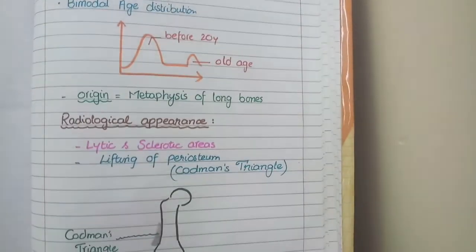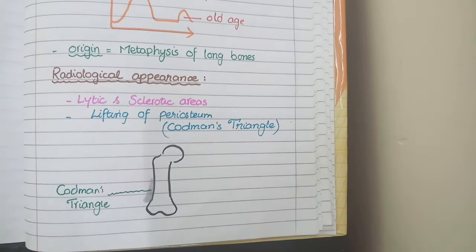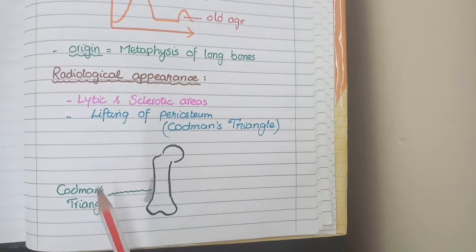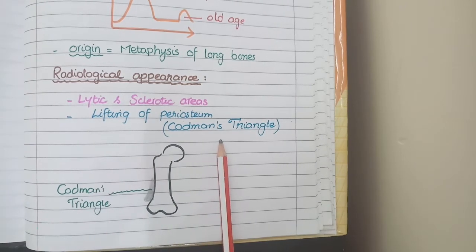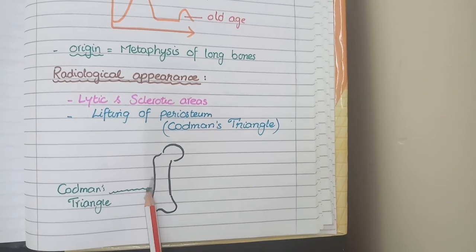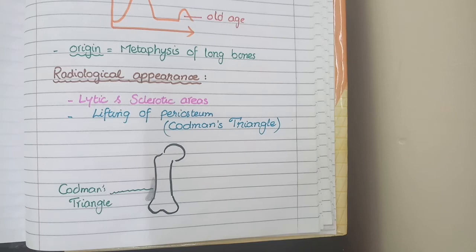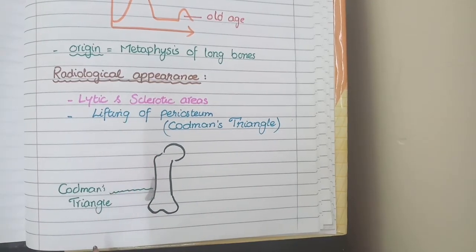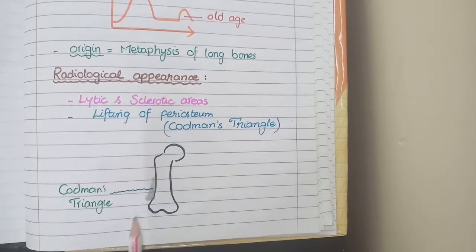On radiological appearance, osteosarcomas show lytic and sclerotic areas, which appear as slightly darker colors in the usual whitish area of bone. They can also show lifting of the periosteum, called Codman's triangle. You can see in the diagram a periosteal shadow caused by lifting of the periosteum. So radiologically, you see lytic and sclerotic areas in the metaphysis and Codman's triangle.